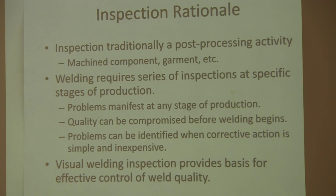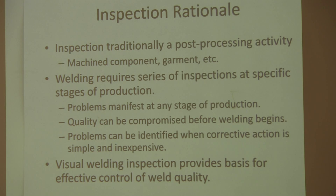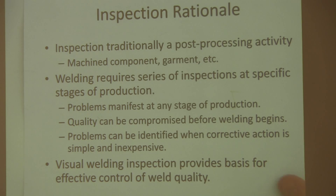Inspection is traditionally something that was done post-processing, but that doesn't work so well with welding because problems during welding can manifest themselves at any stage. Quality can be compromised even before the welding begins if the joints are not fit up properly. As part of the inspection process, you need to be inspecting as things go along so problems can be identified when corrective action is simple and inexpensive. Visual welding inspection — what the CWI does — is the basis for this weld quality control.